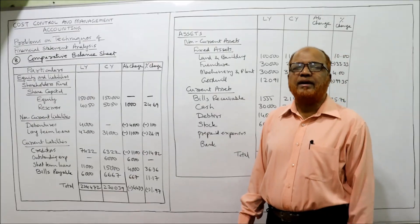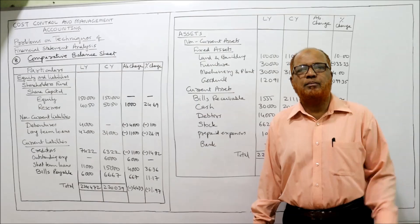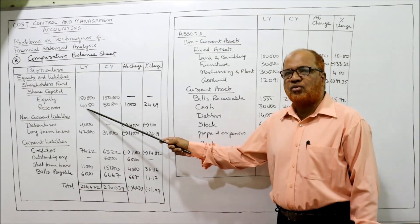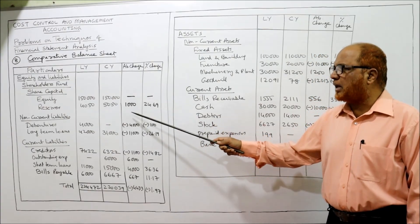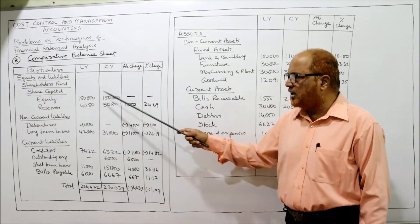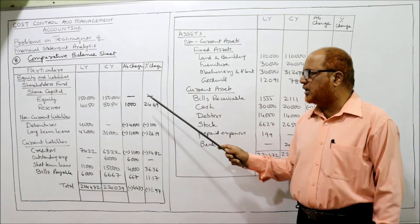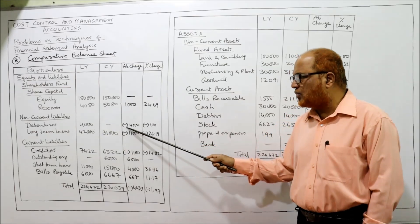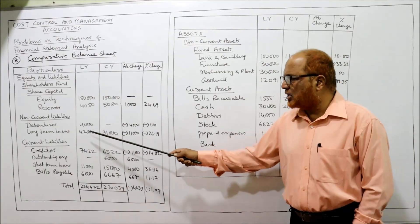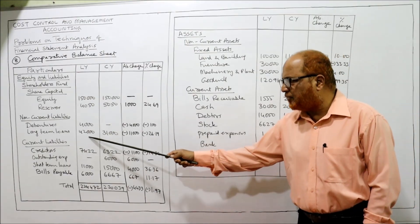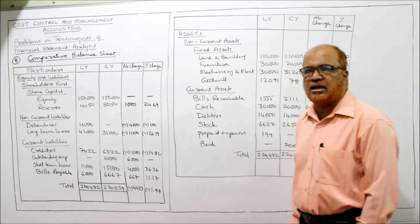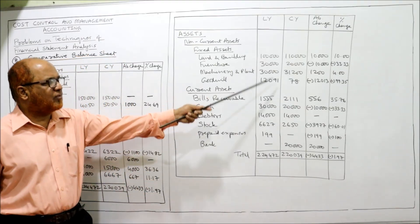Current assets — the remaining items: bills receivable, cash, debtors, stock, prepaid expenses, and bank. The same values are copied and the total of current assets and total of the asset side are obtained. Now for absolute change: current year value minus last year value. For example, one lakh fifty minus one lakh fifty equals zero — no change. To find percentage change: absolute change divided by last year figure multiplied by 100. For instance, minus four thousand divided by four thousand into 100 gives minus 100 percent. Calculate all absolute and percentage changes for both liabilities and assets.